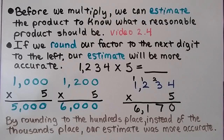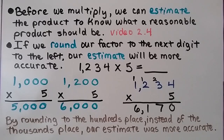Before we multiply, we can estimate the product to know what a reasonable product should be. We learned about estimating in video 2.4, and there is a link in the description. If we round our factor to the next digit to the left, our estimate will be more accurate.